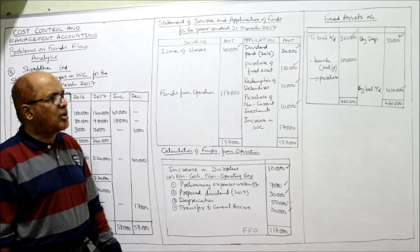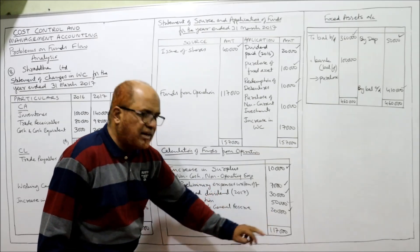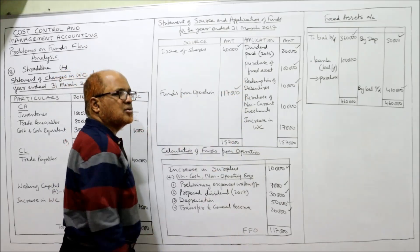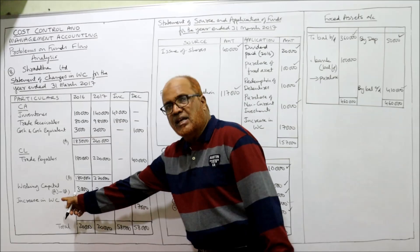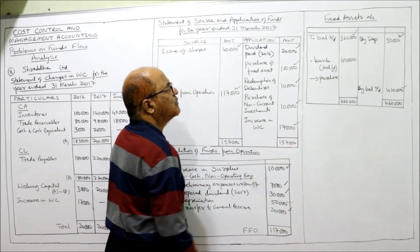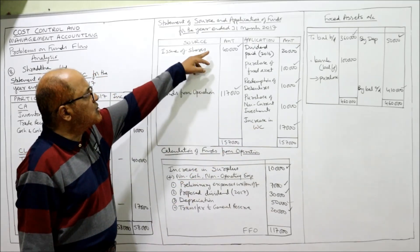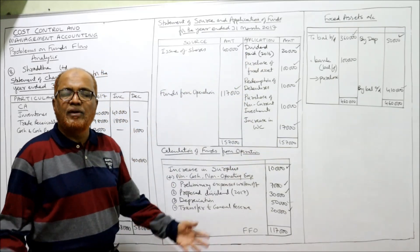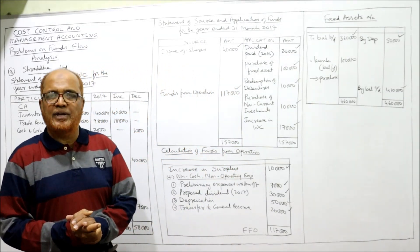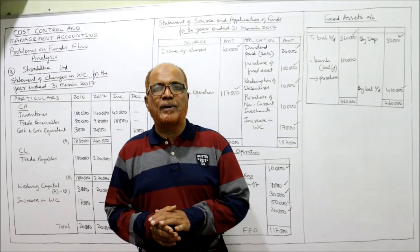Adding up all items, funds from operation is one lakh seventeen thousand. Increase in working capital seventeen thousand on application side. Source side total one lakh fifty-seven thousand; application side total one lakh fifty-seven thousand — both totals are equal, meaning our solution is correct. This is the procedure of making funds flow statements. Totally eight problems completed on the topic of funds flow statement.